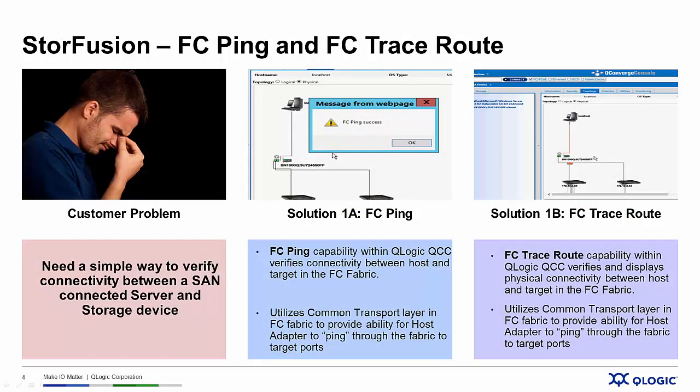Let's start by looking at the customer problem. The SAN administrator gets a call that an application doesn't seem to be running like normal, and of course he's getting the blame. It couldn't be the server, and it couldn't be the application — it's always storage. Where does he start to verify if there's a problem or not?